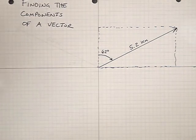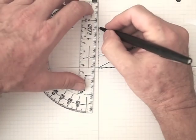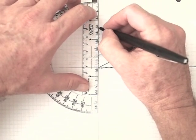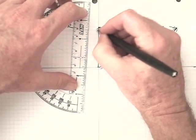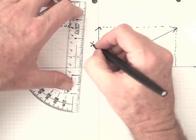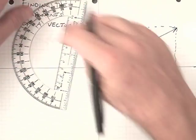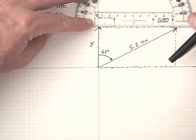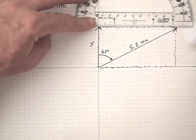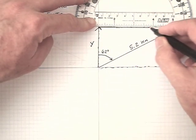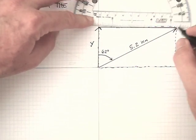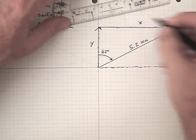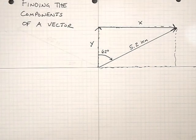So I can see that I'm going to have a side that's directed along the positive y-axis here, and I'm going to label that y. And I'm going to have another side of the right triangle which is directed parallel to the positive x-axis. I'll label that x.